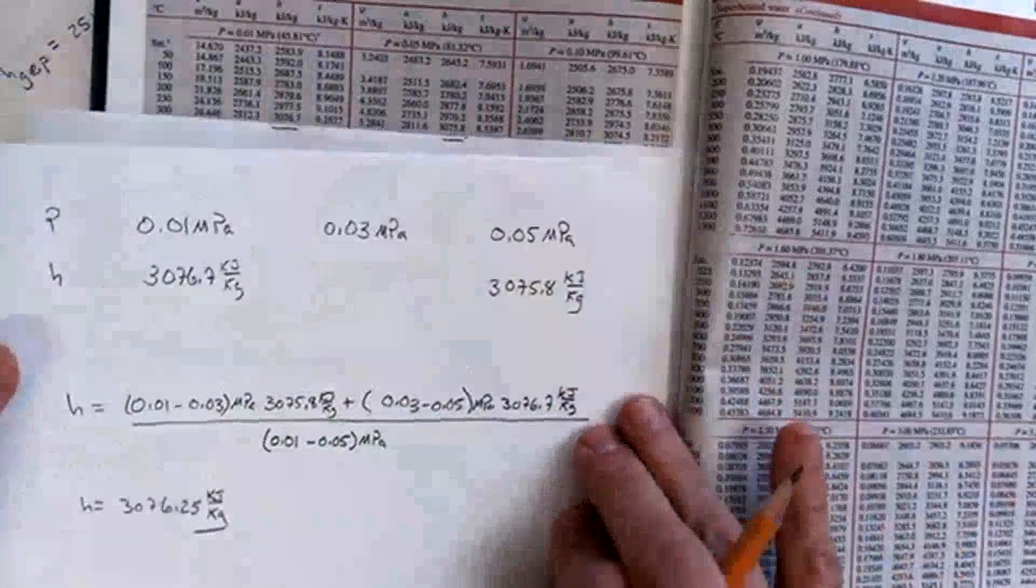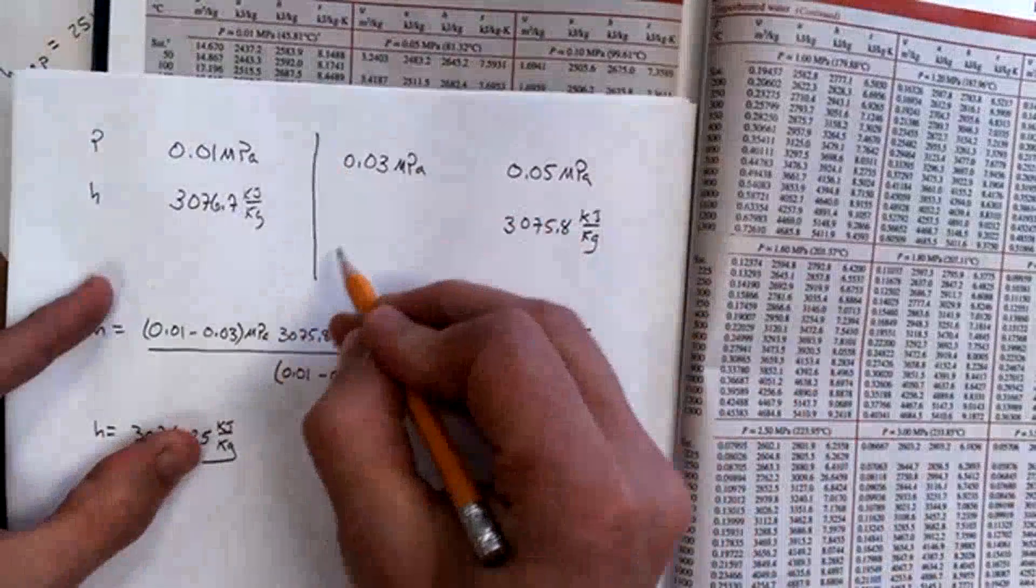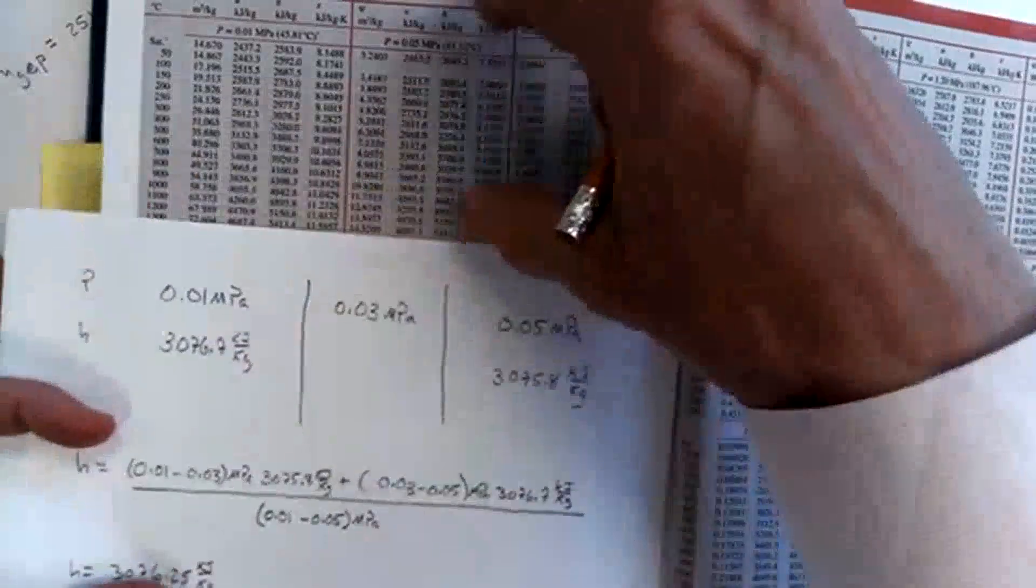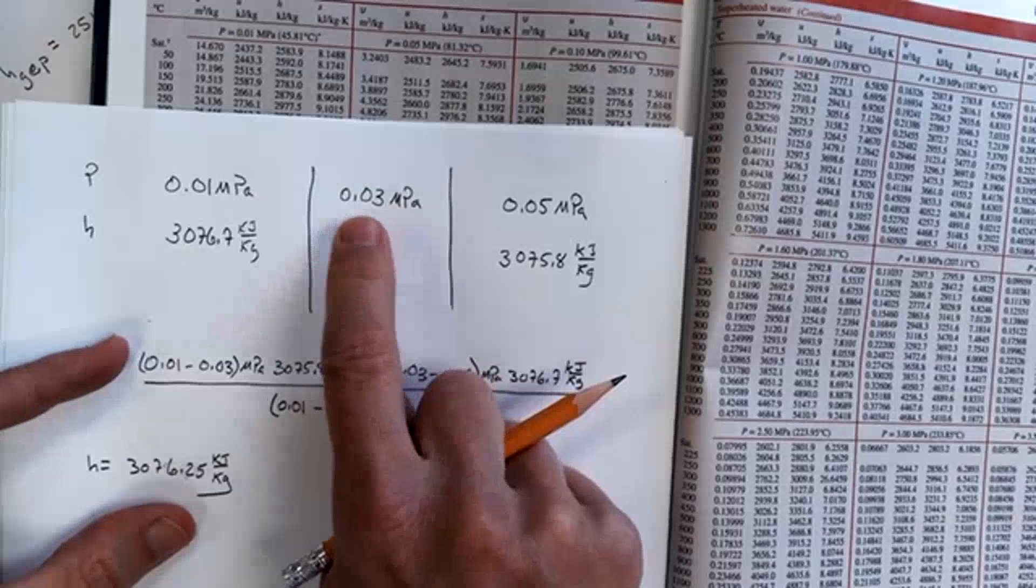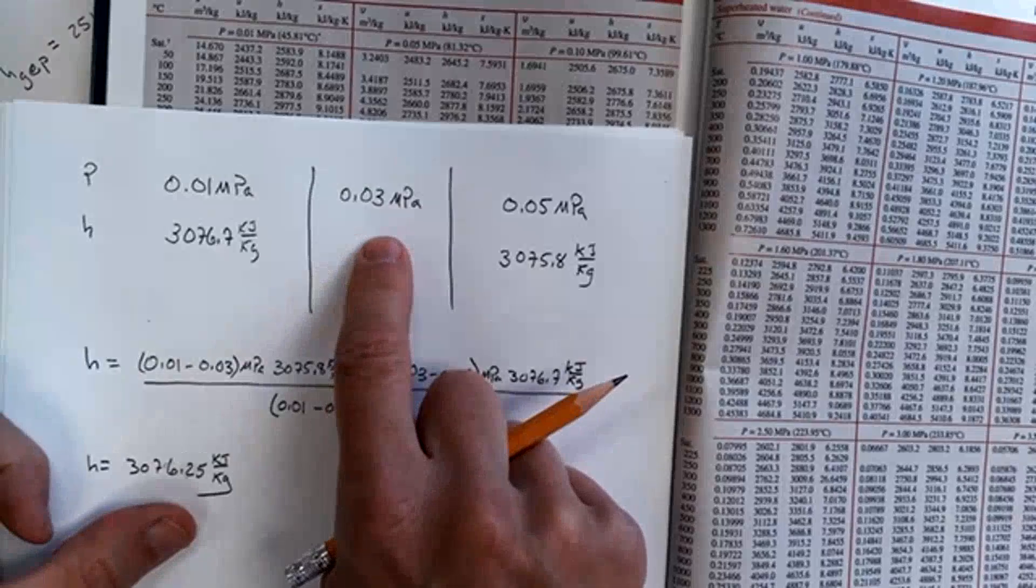Here's my interpolation that I set up. So what I wish I had was a block like this at 0.03 megapascals. So I'm going to linearly interpolate to find this H value here.